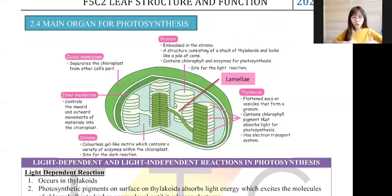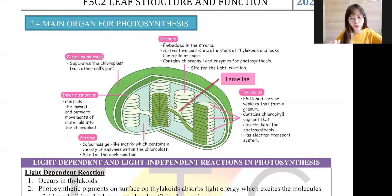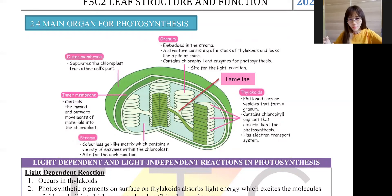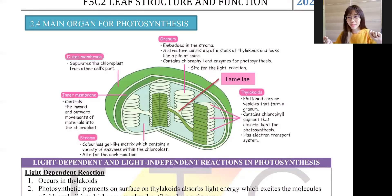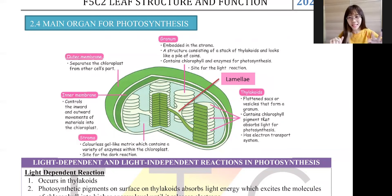When we talk about photosynthesis, what do we have to know? We have to know about the diagram and the organelles that carry out photosynthesis. The organelle that carries out photosynthesis is obviously the chloroplast. Chloroplast has a double membrane, which we learned in Form 4 Chapter 2. If you don't know, you can refer to my Form 4 Chapter 2 video on organelles. The most important part here is to know what is inside the chloroplast.